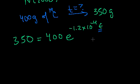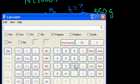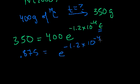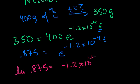We could divide both sides by 400. 350 divided by 400 is 7 eighths, so 0.875 is equal to e to the minus 1.2 times 10 to the minus 4t. You take the natural log of both sides. The natural log of 0.875 is equal to minus 1.2 times 10 to the minus 4t.